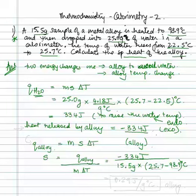Remember, 25.7 is the final temperature of the water, 98.9 is the initial temperature of the alloy. Once you do the calculations, this temperature will come out as negative. That negative will cross out this negative, and you should come up with your final answer as 0.29 joules per gram degree Celsius.